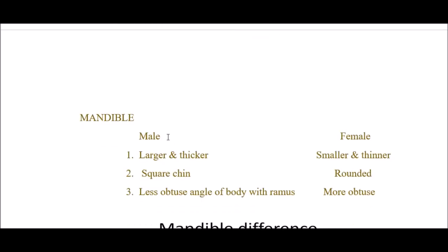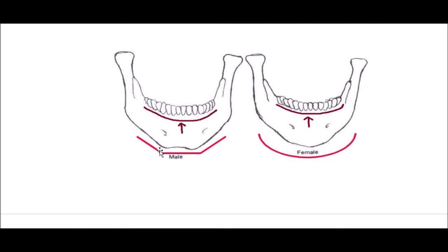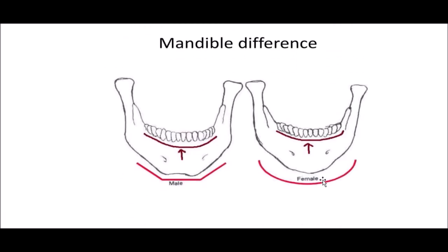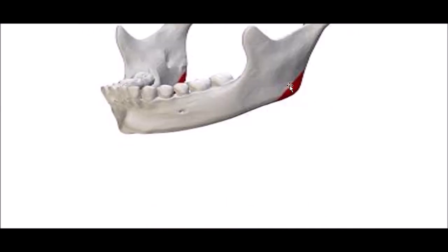Based on the mandible: the male mandible is larger and thicker; the female is smaller and thinner. The chin is square-shaped in males but rounded in females. The angle between the ramus and the body of the mandible is less obtuse in males and more obtuse in females.